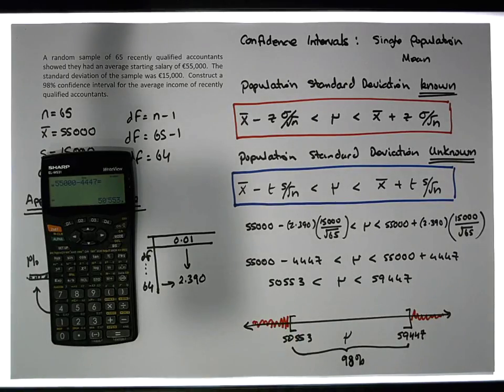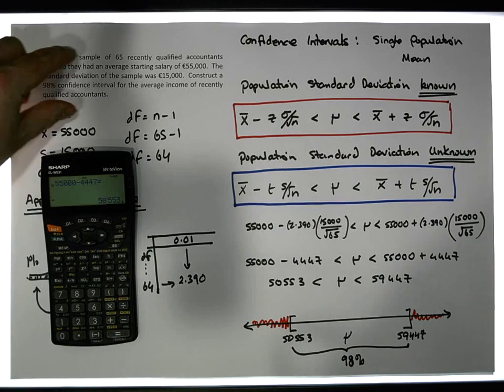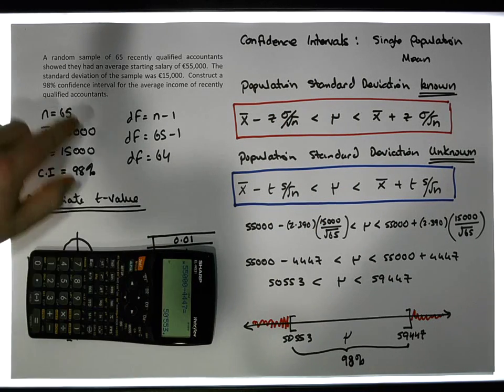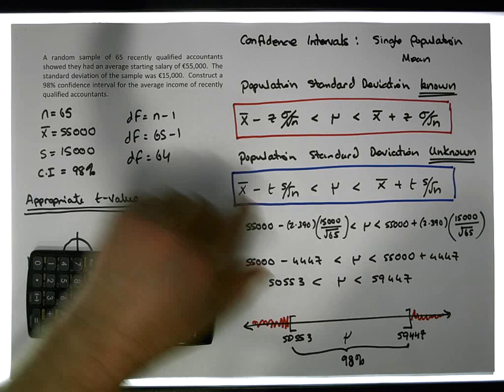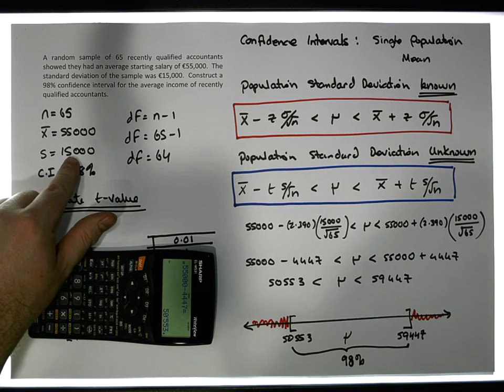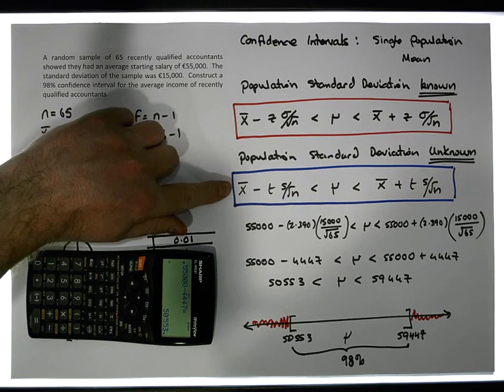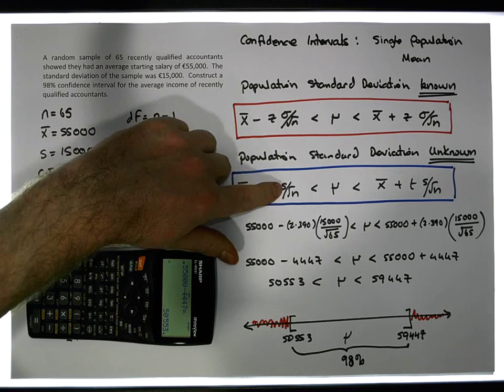A key thing to keep in mind is that when we're doing a confidence interval, it's a single sample of data being provided. We don't know the population standard deviation; we know the sample standard deviation, in which case we use the formula that relies upon a t-distribution.